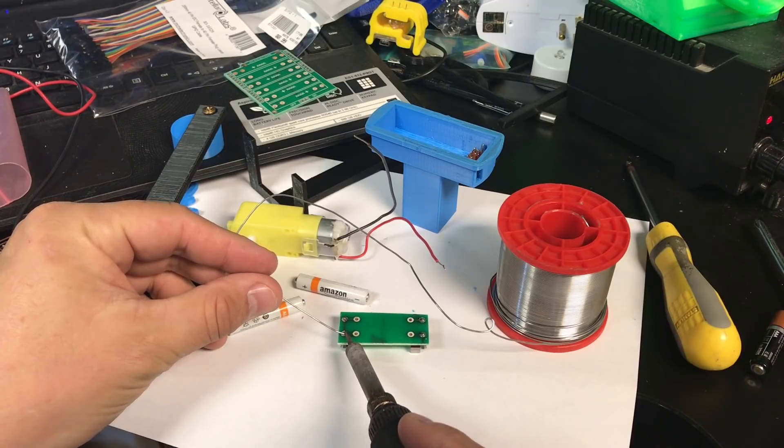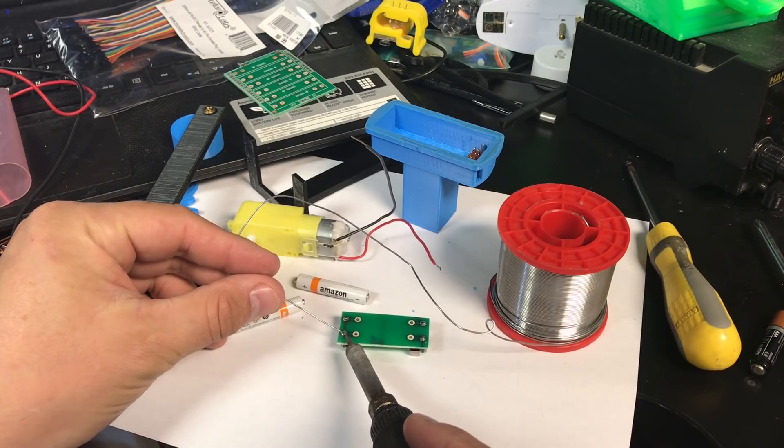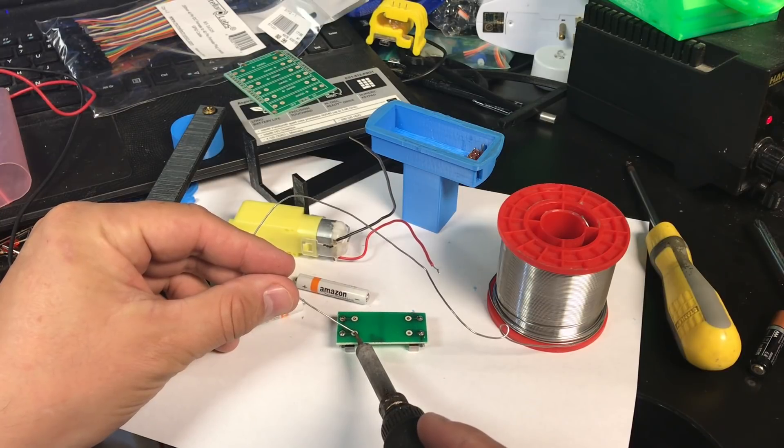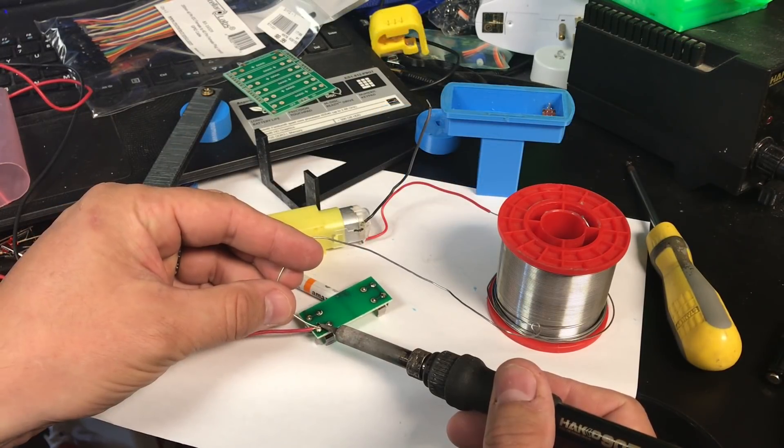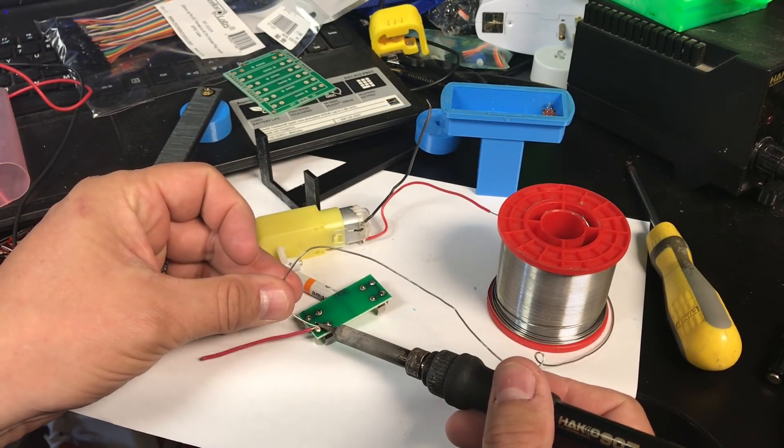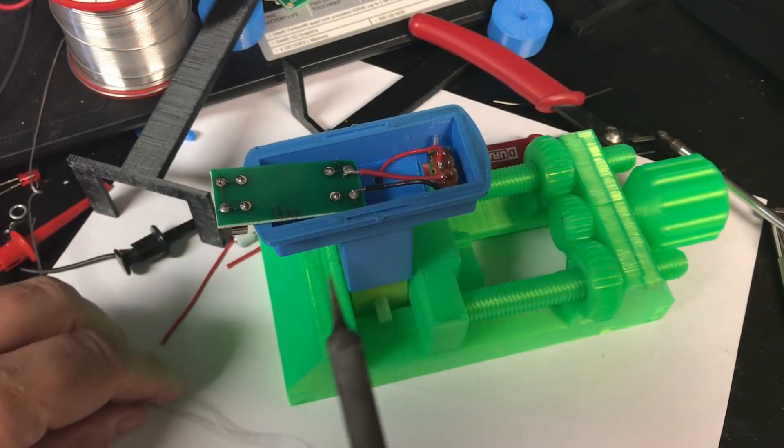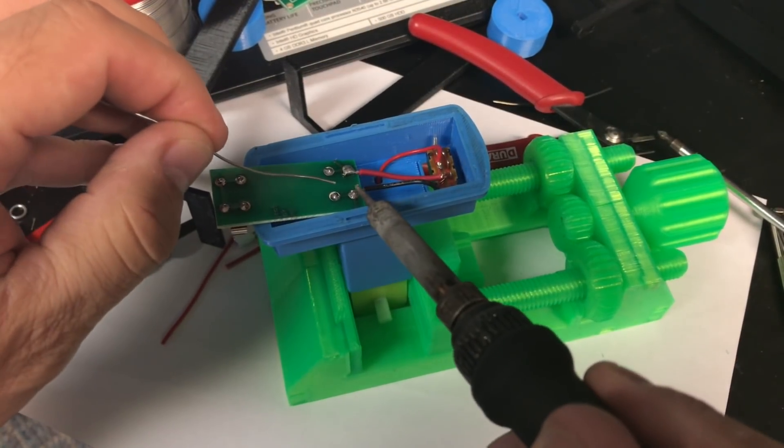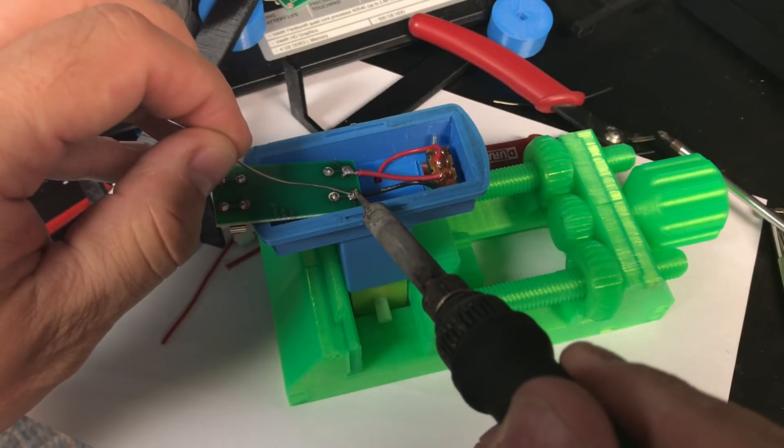So I soldered on the clips and that gave me the battery holder frame that the batteries will actually clip into and then I soldered a red wire to the positive side of this battery holder. I clamped it into my 3D printed clamp and then I soldered the negative wire of the motor to the negative side of the battery holder.